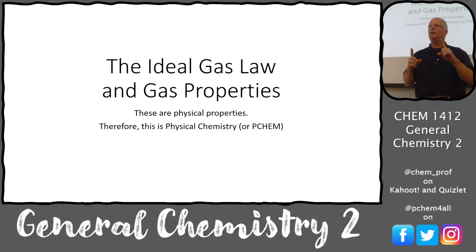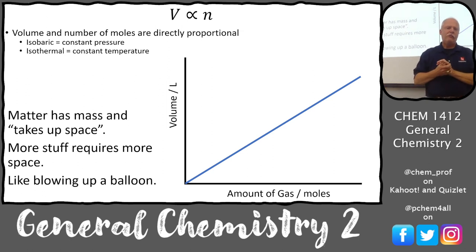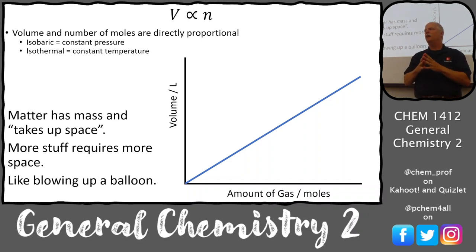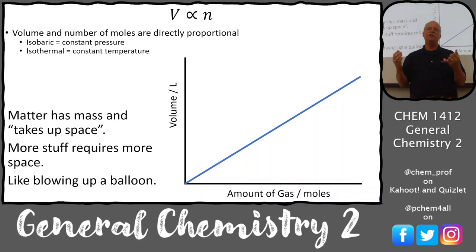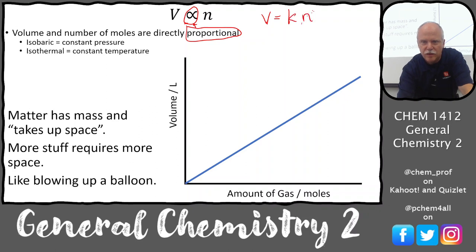We'll do a problem related to car tires — if a cold front comes in, your pressure will go down, but how much will it likely go down — and then we'll get into Dalton's law of partial pressures next time. Volume: if you have a gas, whether it's helium, hydrogen, or oxygen, it has mass and takes up space. More moles means more volume — it's directly proportional. V is equal to some constant times the number of moles.